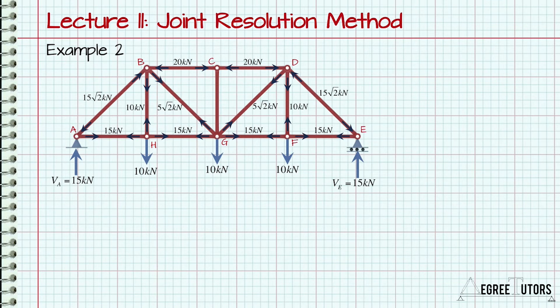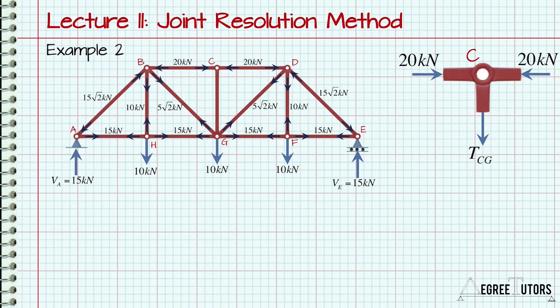Now the only remaining joint that has not yet been investigated is joint C, with the unknown member force TCG. By simple inspection, we can see that the horizontal forces balance. We can also see that TCG must equal zero as there are no other forces acting on the joint. Therefore, the externally applied loads do not induce any internal force in member CG.